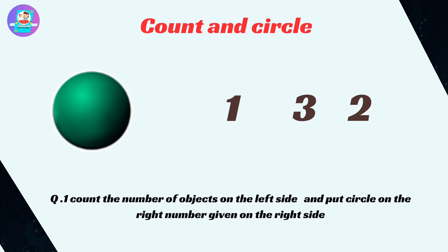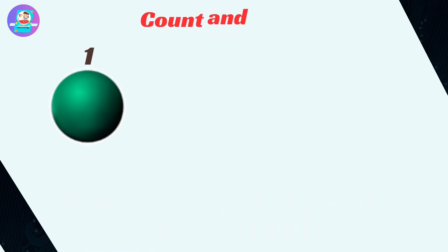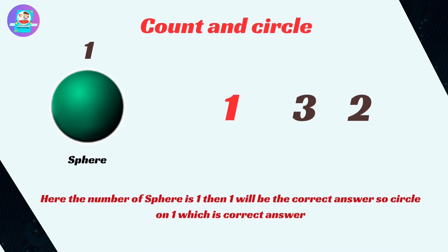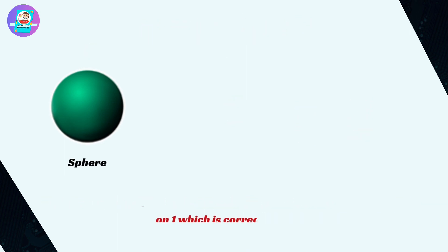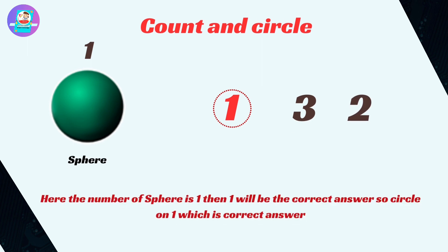Let's understand first what we are going to do. Count the number of objects on the left side and put the circle on the right number given on the right side. For example, count the number of sphere on the left side and put circle on the right number given on the right side. Here the number of sphere is 1, then 1 will be the correct answer. So circle on 1 which is correct answer.